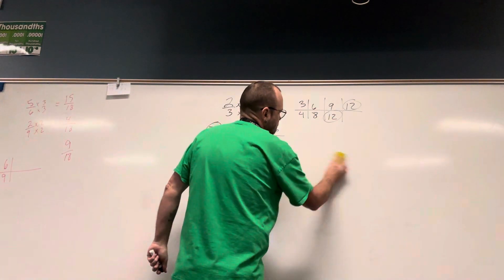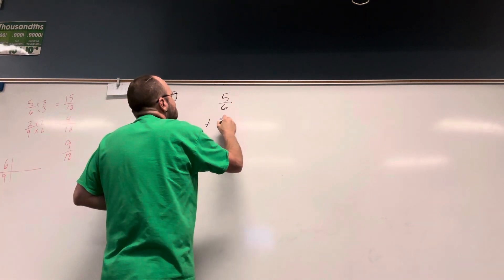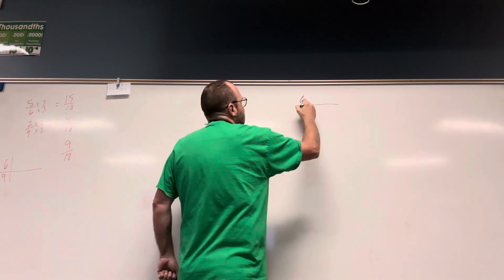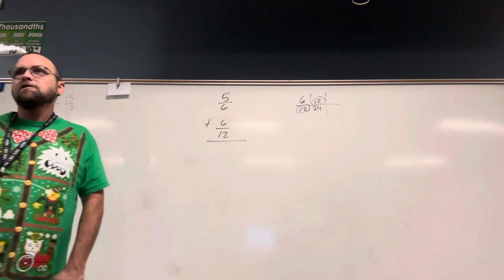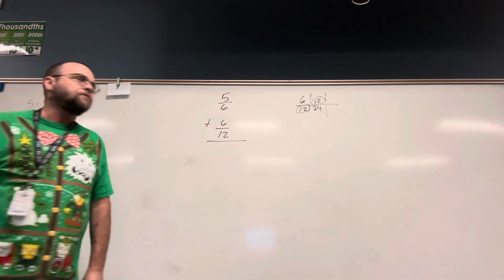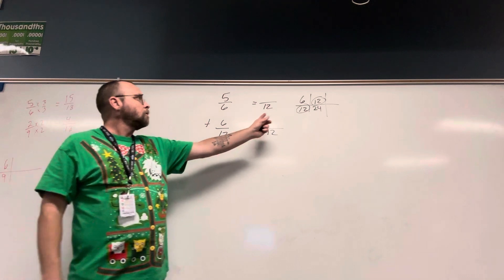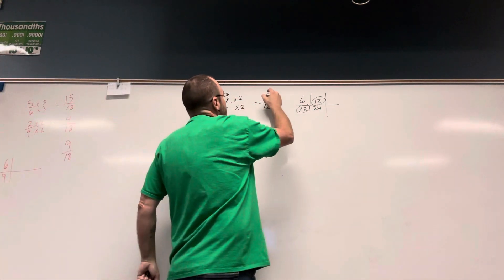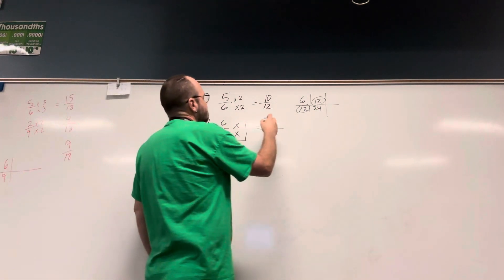The last problem is 5 sixths plus 6 twelfths. I can't add those the way they are — I need a common denominator. My denominators are 6 and 12, and 12 is my common denominator. So I need to change both fractions to have a denominator of 12 without changing their value. 6 times 2 is 12, so I multiply numerator and denominator by 2: 5 times 2 is 10. For the fraction already over 12, I multiply by 1, so 6 stays 6.